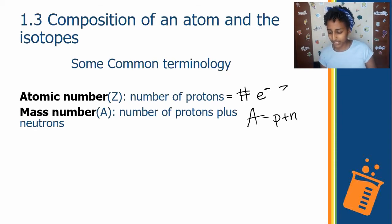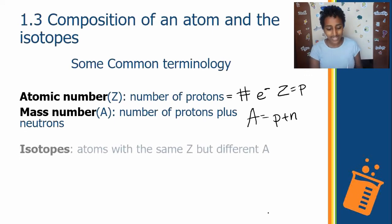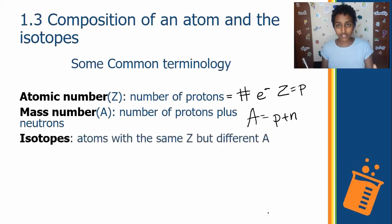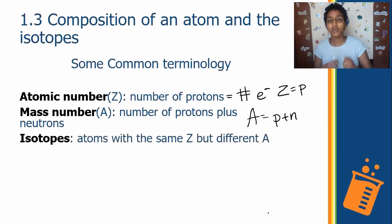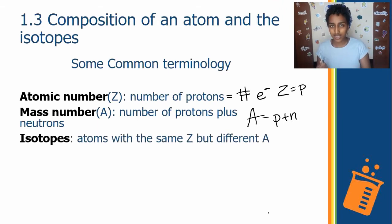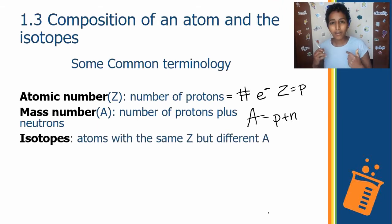While atomic number is simply the number of protons, the next concept is isotopes. Isotopes are atoms with the same Z but different A — the same atomic number but different mass number. How could this be?